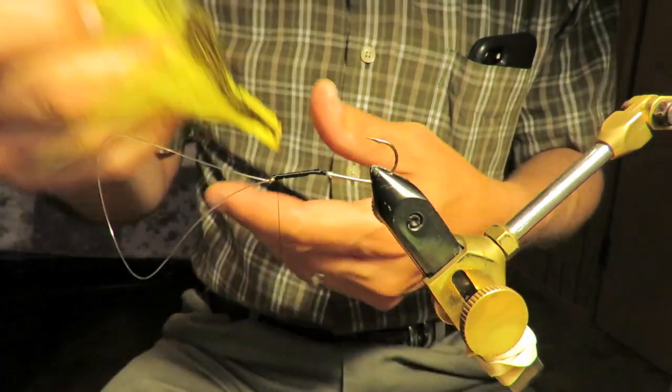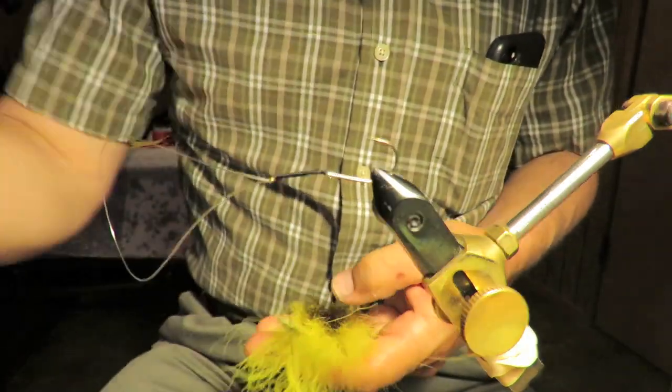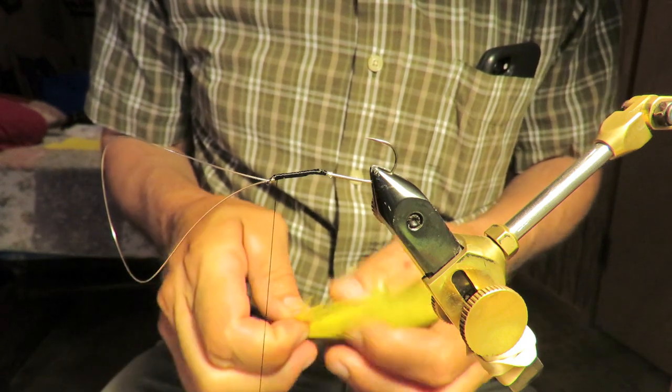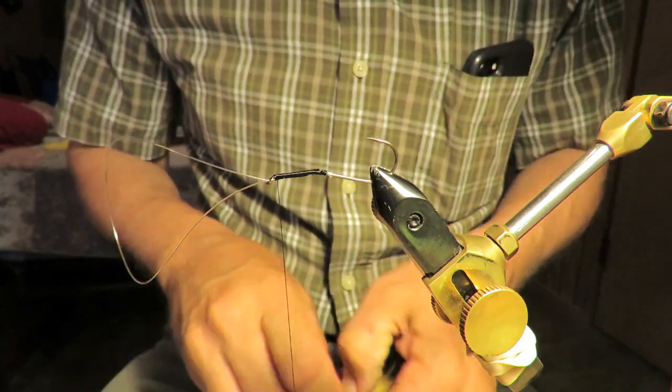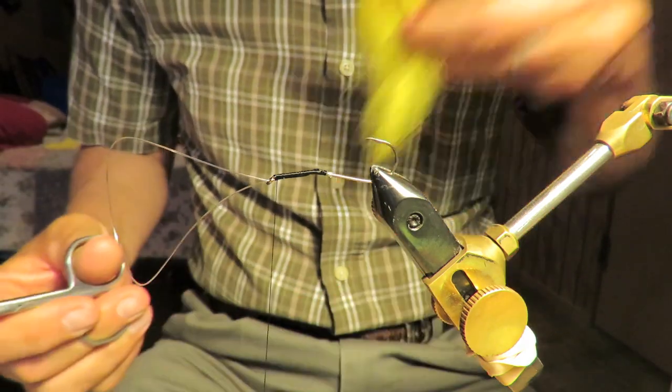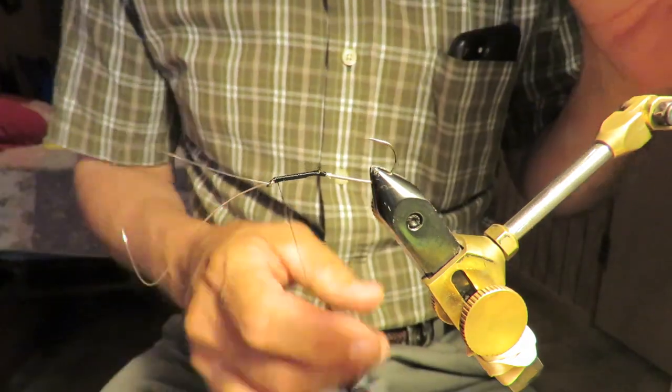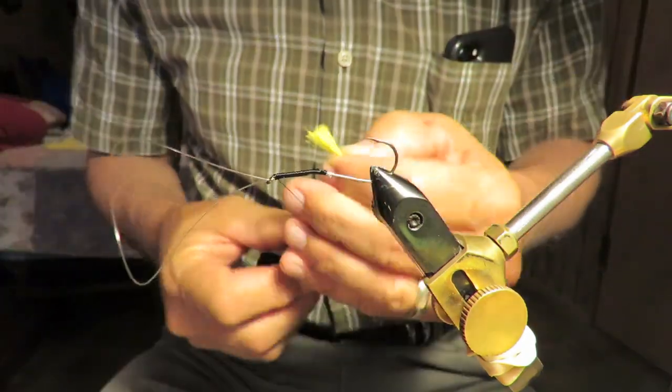Alright, there you go. Now first step, bucktail. Bucktail, nice little puff of it. Tie it in at the very end of your thread, on the very back. So walk your thread back.